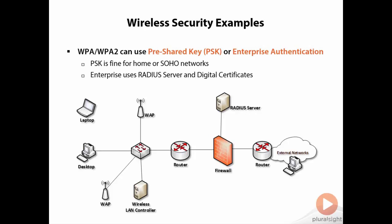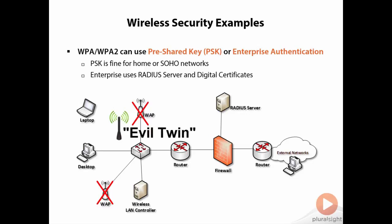Let's look at a real-world example of how a hacker could gain access. Say we have two wireless access points. A malicious individual could set up a rogue access point and issue a denial of service against our existing wireless access point — basically taking it offline. They could then put up a wireless access point using open authentication, meaning no password is required. That rogue access point is otherwise known as an evil twin. Even though users have credentials for the legitimate access point, it's been DDoSed so they can't connect, and they end up connecting to the evil twin instead.